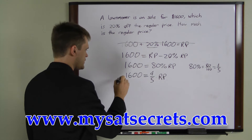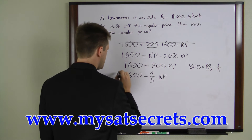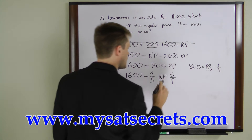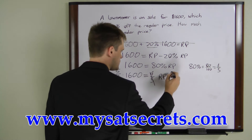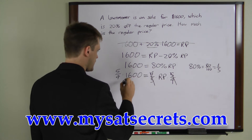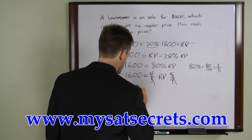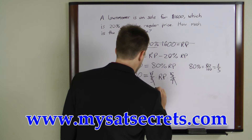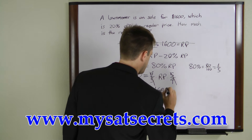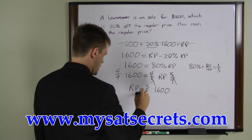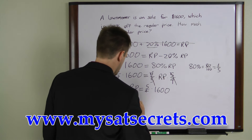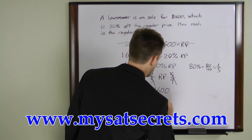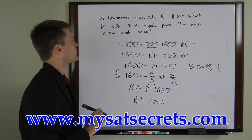To solve this, multiply both sides by 5 over 4. The four-fifths cancels, leaving: regular price equals 5 over 4 times $1600, which equals $2000. So the regular price of the lawn mower is $2000.